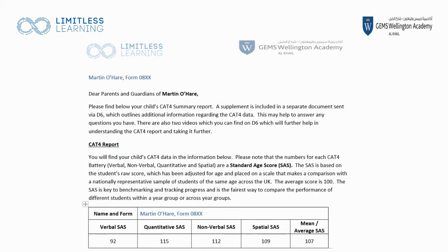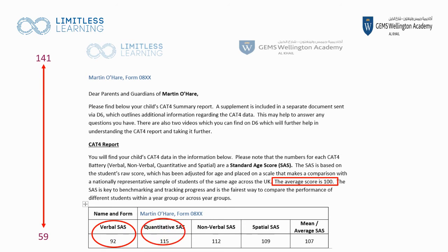This is what a typical CAT 4 report from the school will look like. It's made up of dummy data using myself as an example — this is not a real child. You will see that the average score is 100, the highest a child can achieve is 141, and the lowest is 59. This is called the Standard Age Score (SAS), which is a standardized sample of your child's raw scores adjusted for their age. The SAS is given for verbal, quantitative, non-verbal, and spatial, and then an average of all of these is combined into what's known as the mean SAS.